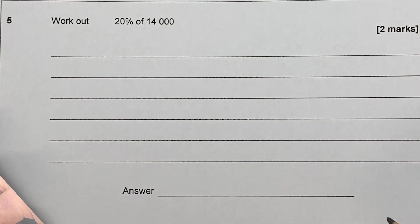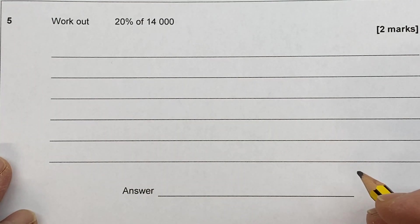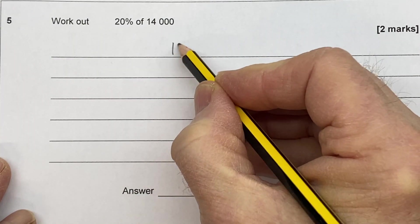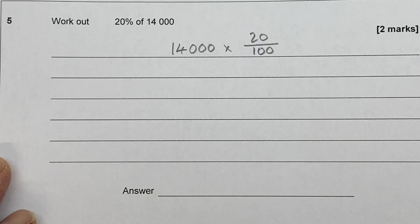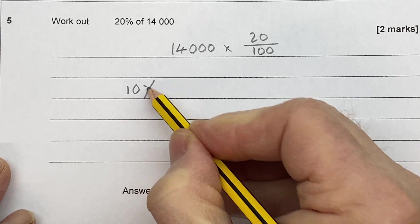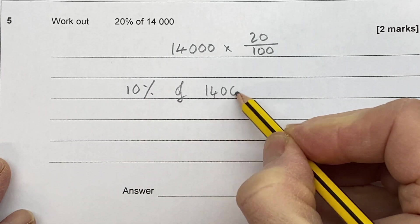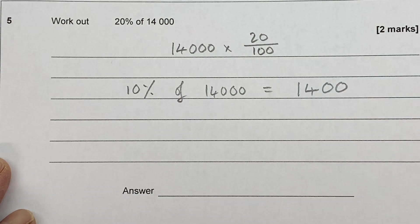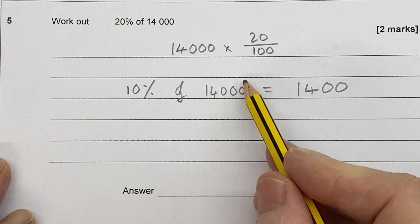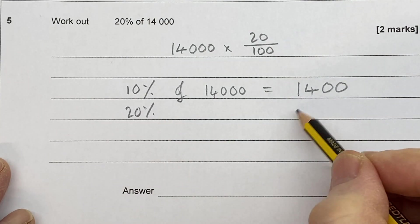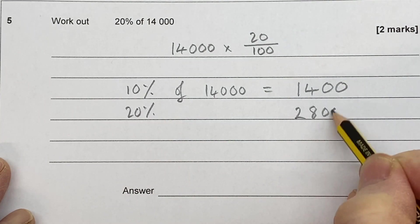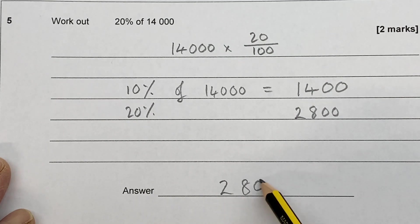Done. Question five. Work out 20% of 14,000. Now there are lots of ways of doing this. You could say 14,000 times 20 divided by 100. But actually I think the quickest way is to say, well I know that 10% of 14,000 has to be 1,400. All we've done is divided by 10. So we've lost the zero. 1,400. So 20% will be double that. So that's 2,800. There we go. 2,800.